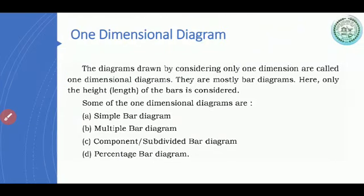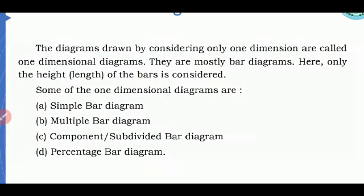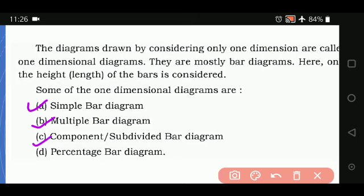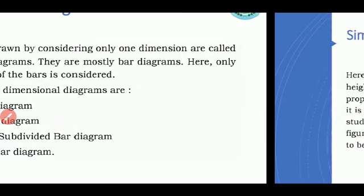So, one-dimensional diagram. The diagrams drawn by considering only one dimension are called one-dimensional diagrams. They are mostly bar diagrams. Here, only the height or length of the bar is considered. Some of the one-dimensional diagrams, what you're going to study for the POC one is. The first one is simple bar diagram. Then, you have the multiple bar diagram. Then, you have the component subdivided bar diagram. Then, you have the percentage bar diagram. So, here also, in diagram section, you may get anyone, you may get a simple question on. They may ask you, please represent the data by simple bar diagram or multiple bar diagram or component subdivided bar diagram or percentage bar diagram. So, you will be having one graph or one diagram from this chapter. One diagram, one graph will be there for you all.